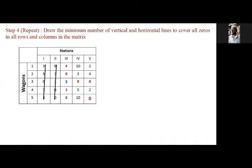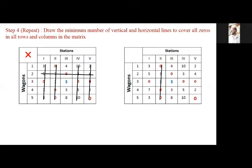Going through the process: 1, 2, 3, 4, and 5 — let us check whether this is correct. No, this procedure is also wrong, because there might be a way to cover zeros in fewer than 5 or 4 lines. In another example, drawing 1, 2, 3, 4 — all zeros are covered in 4 lines. This is the correct way, but since we have 5 rows and 5 columns, 4 lines is still not an optimum solution. We must repeat this step.